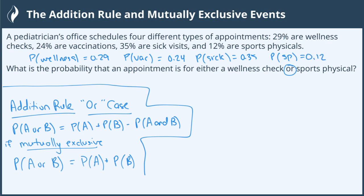The question asks: what is the probability that an appointment is for either a wellness check or a sports physical? When you go to a doctor, especially with insurance, you have one particular reason — you're either doing your wellness check or something else. So a wellness check and a sports physical cannot happen at the same time — these are mutually exclusive events.